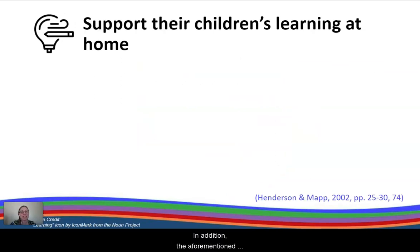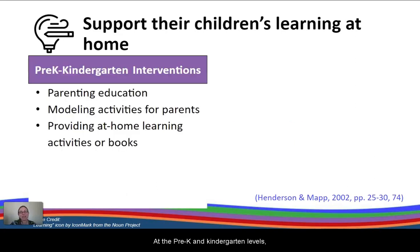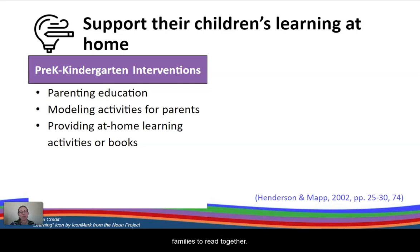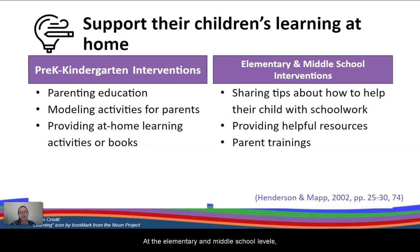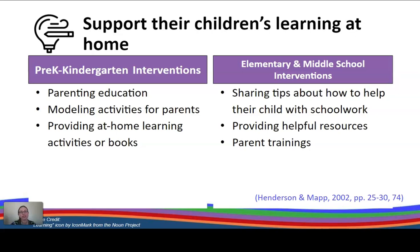The meta-analysis also found that interventions that engaged families in supporting their children's learning at home were linked to higher student achievement. At the pre-K and kindergarten levels, these interventions often included parenting education, modeling activities for parents, and providing at-home learning activities or books for families to read together. At the elementary and middle school level, these interventions usually entailed sharing tips about how to help children with their schoolwork and providing helpful resources or parent training.